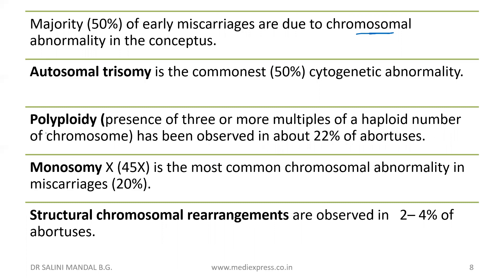The second is autosomal trisomy, which is the commonest cytogenetic abnormality. We also have polyploidy — the presence of three or more multiples of the haploid number of chromosomes — and nearly 22% of abortions are because of polyploidy.